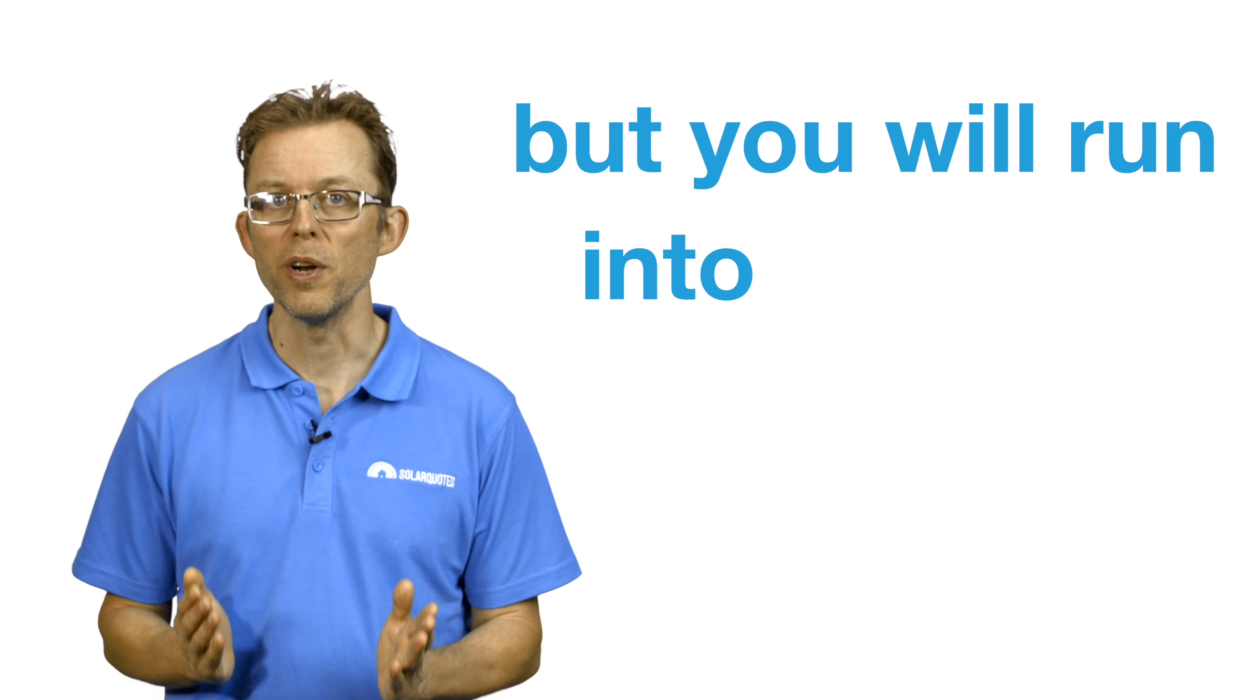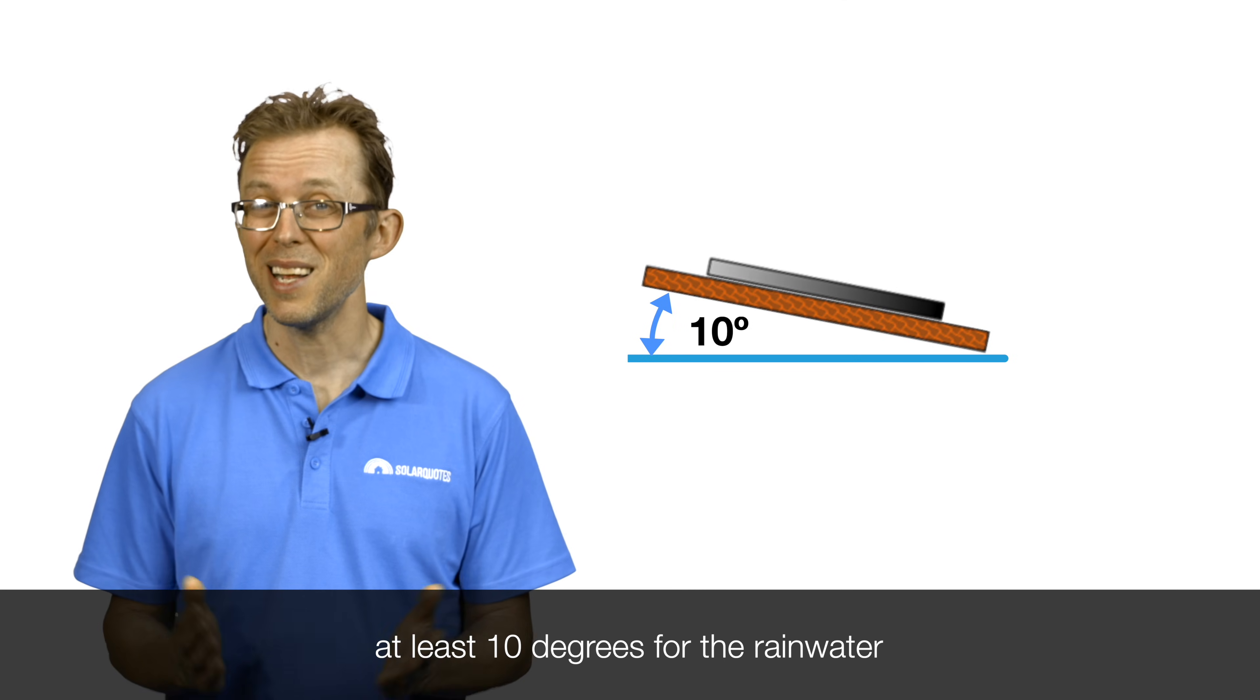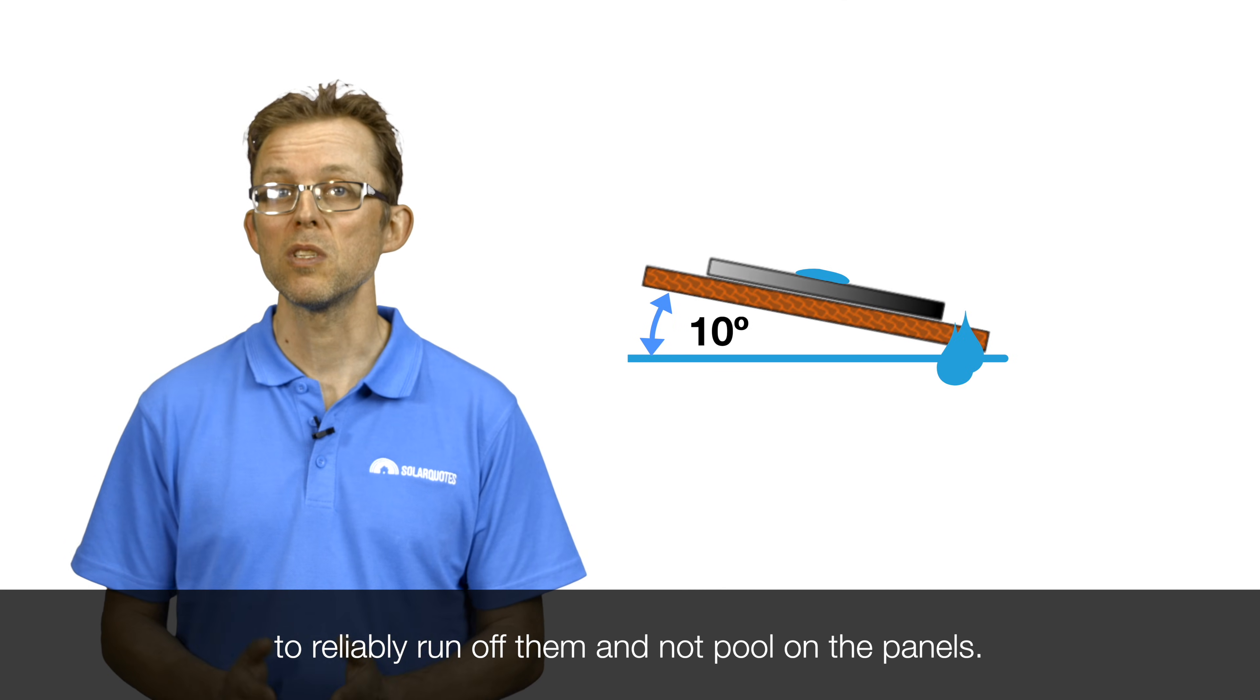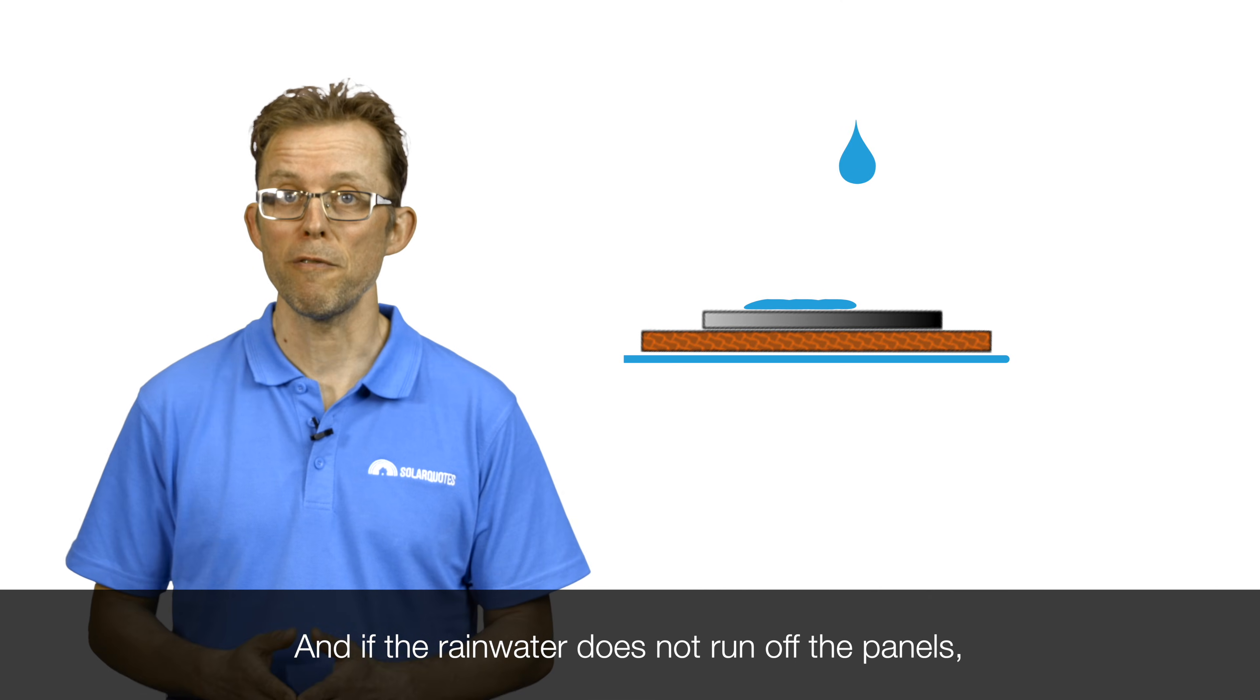But you will run into problems when it rains. That's because panels require a little bit of tilt, at least 10 degrees, for the rainwater to reliably run off them and not pool on the panels. And if the rainwater does not run off the panels, the rain won't clean the panels.